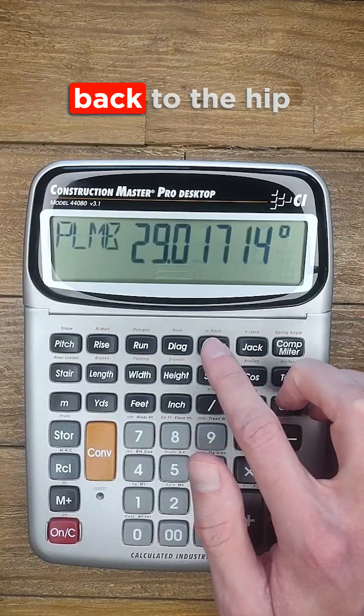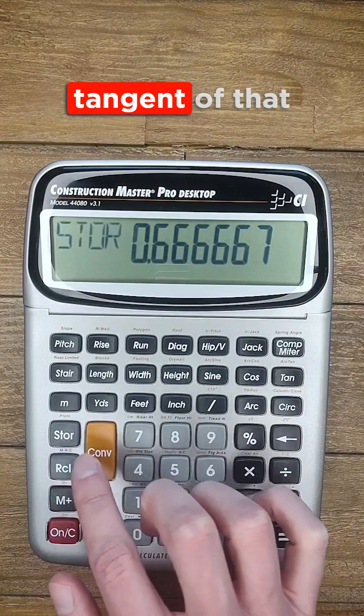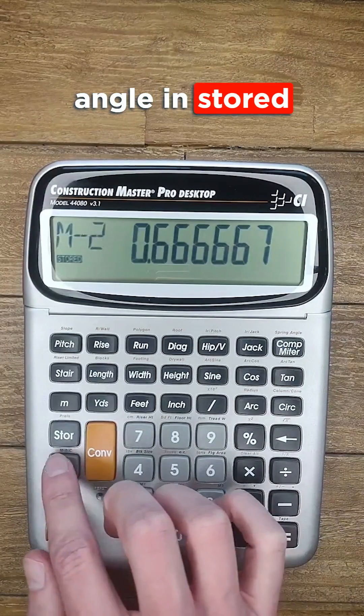Now I'm going back to the hip valley button and pushing that until cheek 1 displays. I need to find the tangent of that angle and store it in memory 2.